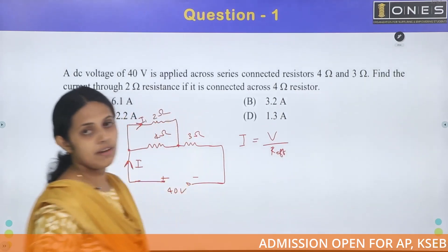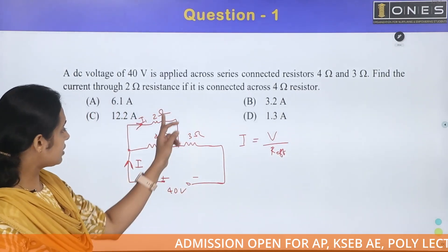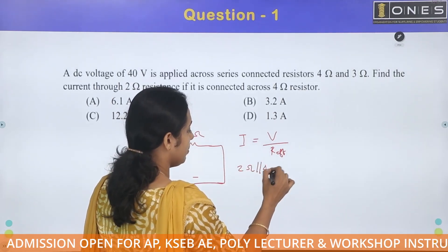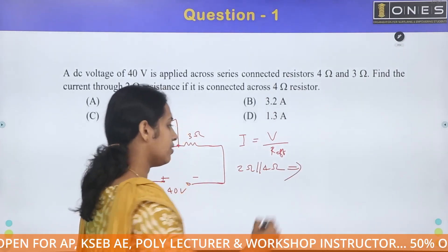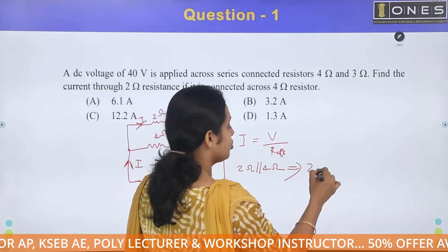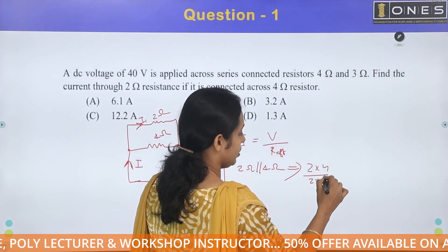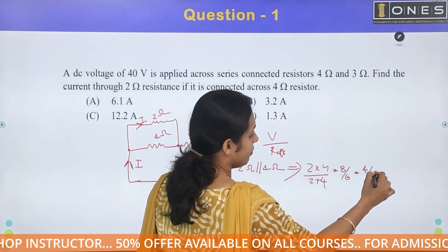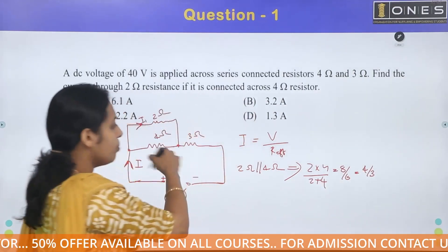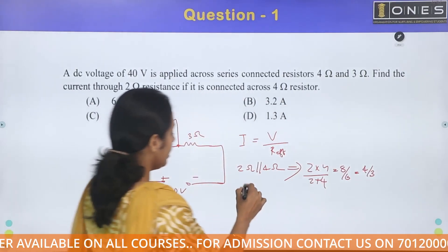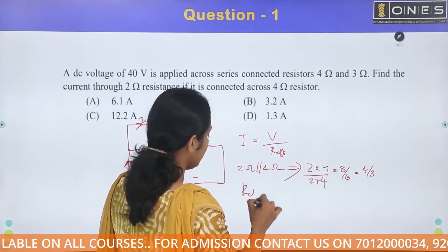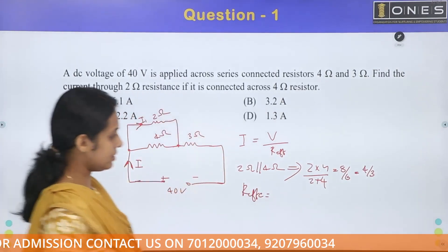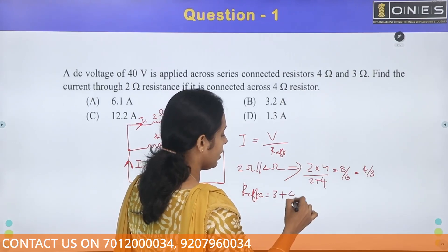First, calculate the effective resistance. The 2 ohm and 4 ohm are in parallel. The parallel combination is 2 × 4 divided by (2 + 4), which equals 8 divided by 6, that is 4/3 ohm. This 4/3 ohm is in series with the 3 ohm resistor, giving 3 plus 4/3.